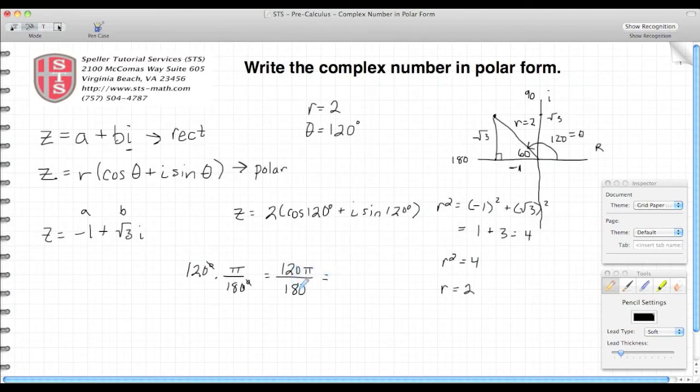I see that both of these are multiples of 60, so 120 divided by 60 is 2, then I'm left with pi, and 180 divided by 60 is 3. So I know that 120 degrees is the same thing as 2 pi over 3 radians.